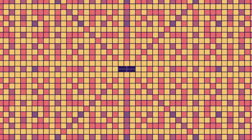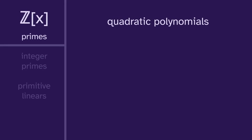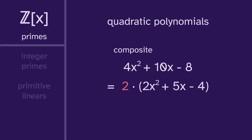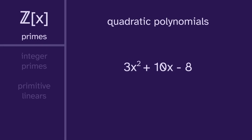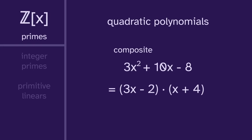But it becomes even more fun when we add the quadratic polynomials. This quadratic is composite — it has a factorization. Notice that we've factored out a 2, because the greatest common divisor is 2. So just like with the linears, a quadratic prime must be primitive — it must have a greatest common divisor of 1, otherwise we could factor out the GCD. But being primitive is not enough. This quadratic is primitive, the GCD is 1, but it's composite because it factors into two linears.